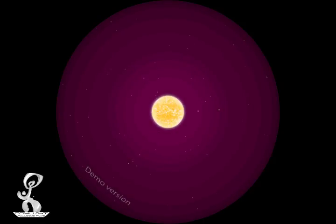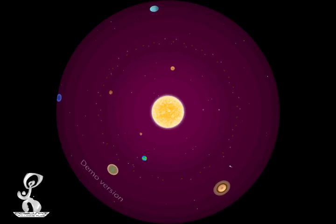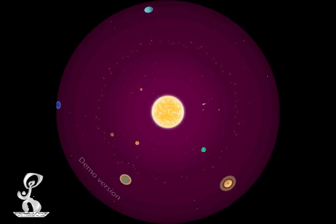Orbiting our Sun are 8 planets, lots of asteroids, comets, and a few tiny dwarf planets. They all together make our solar system.